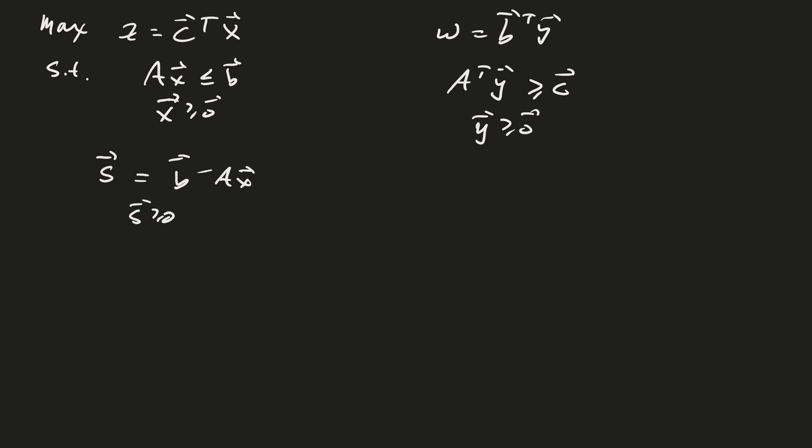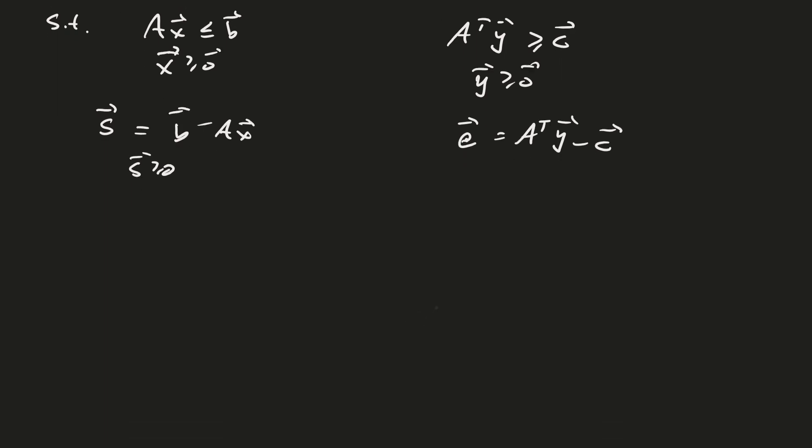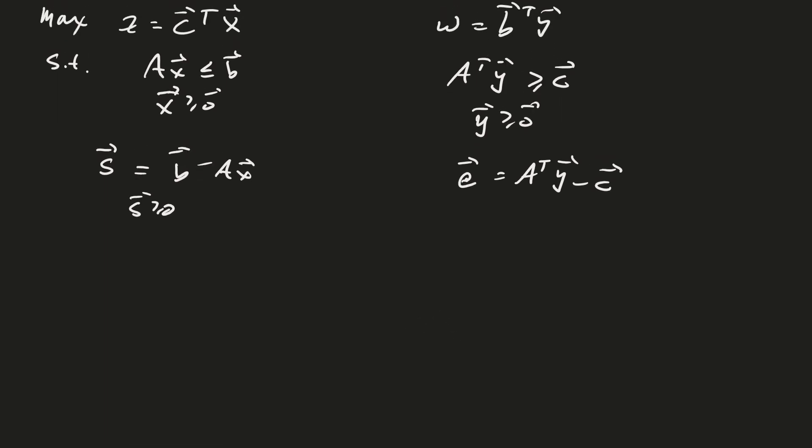Similarly over here, I can say that our excess variable e, sorry about the notation here, this is not a column of the identity, this is the set of excess variables. We can define that to be A transpose y minus c.